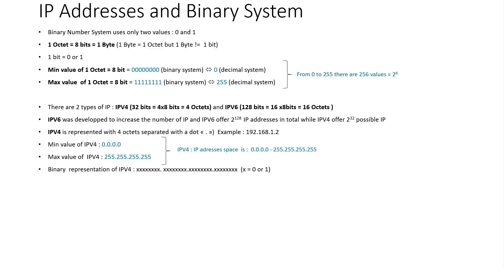Hello, in this session we will briefly review the basics of IP addresses and binary system. Let's start with the first point. Binary number system uses only two values, 0 and 1. 1 octet is equal to 8 bits and equal to 1 byte. It is important to note that 1 byte is equal to 1 octet, but 1 byte is not equal to 1 bit.